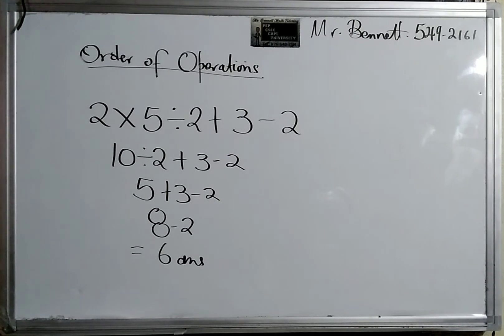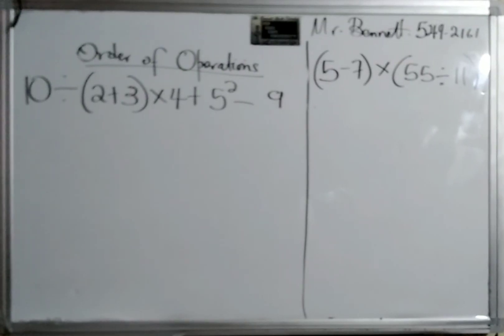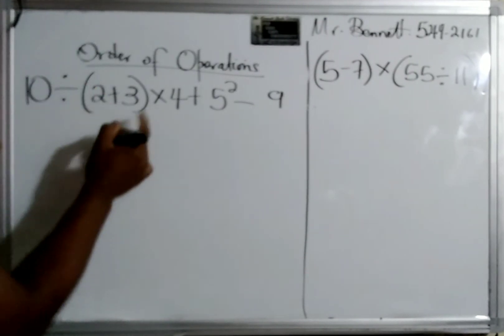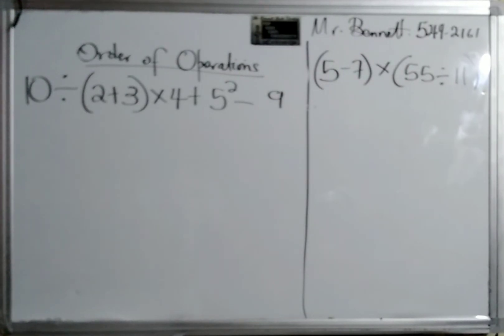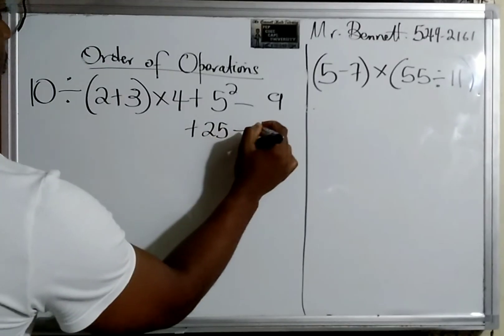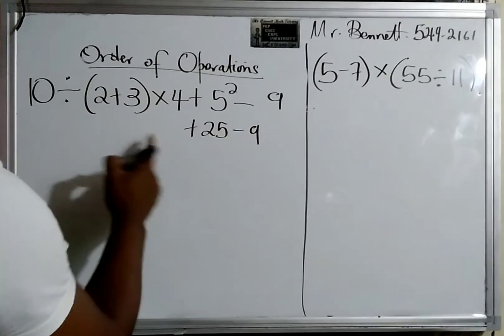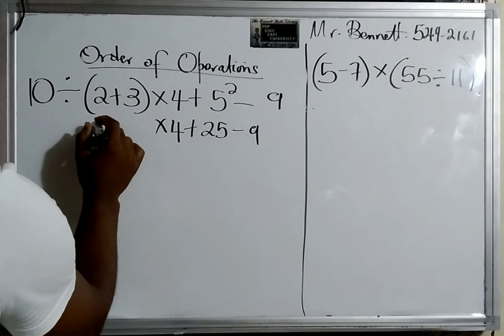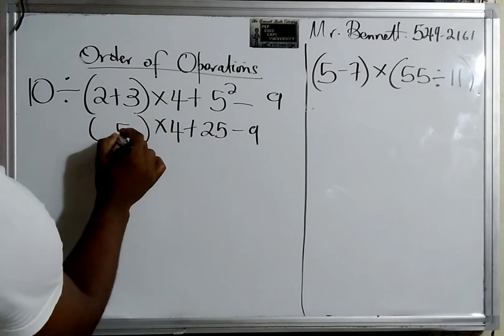All right guys. Let's just look at this one, I have to go and find one that is much more challenging. All right guys, so we have 10÷(2+3)×4+5². Now as I say, we do the power first, so this would be 25. And let's just do step by step. Now the bracket, we add the bracket and we get 5.